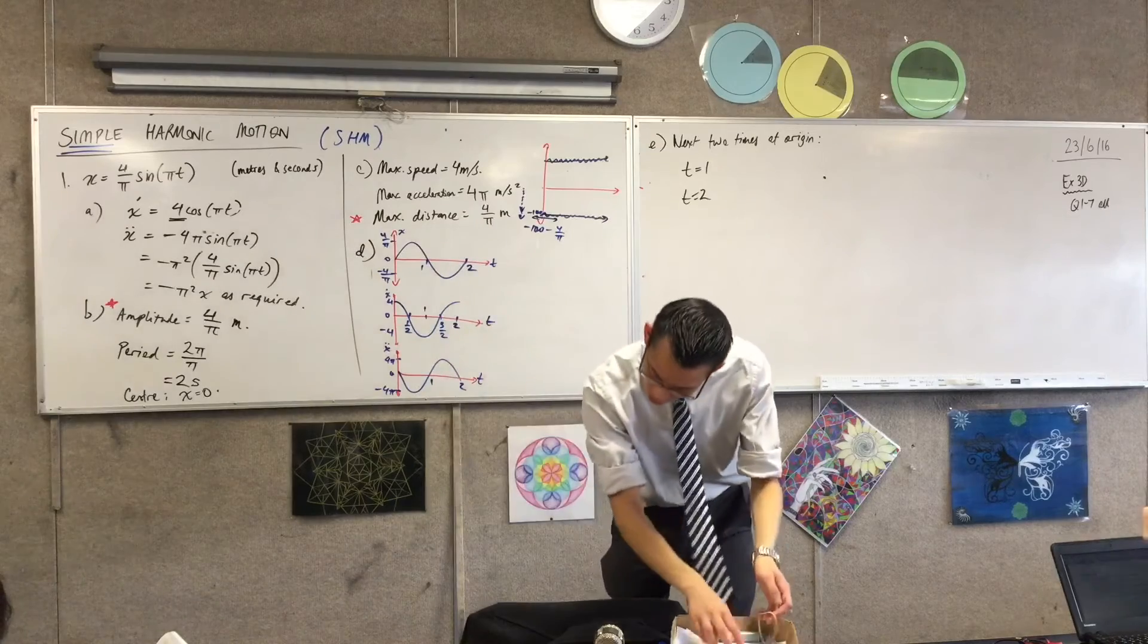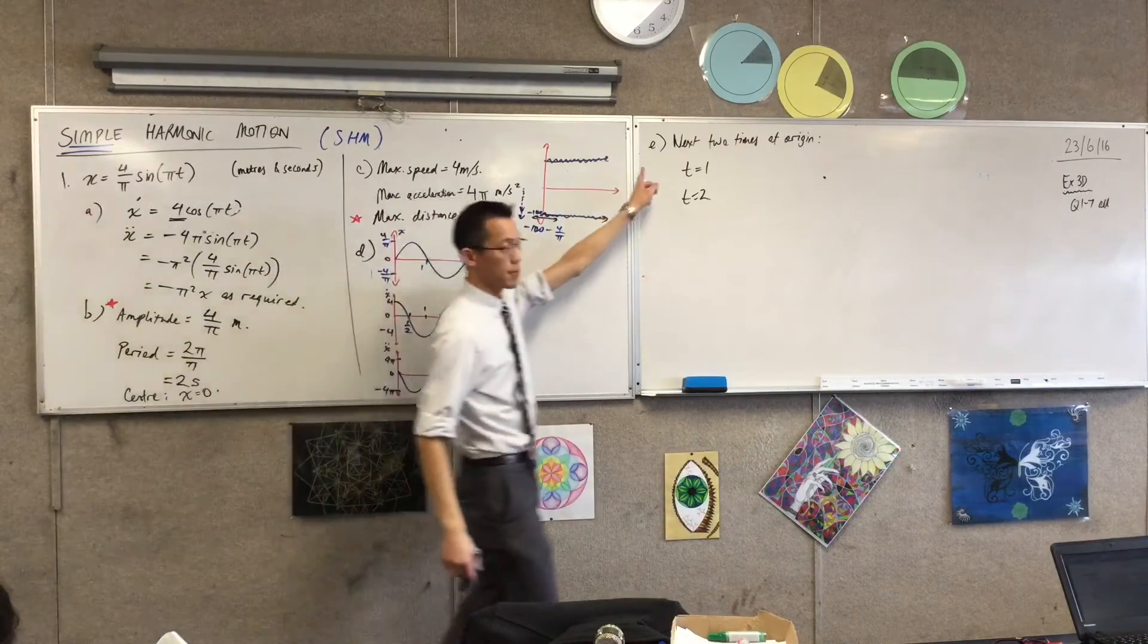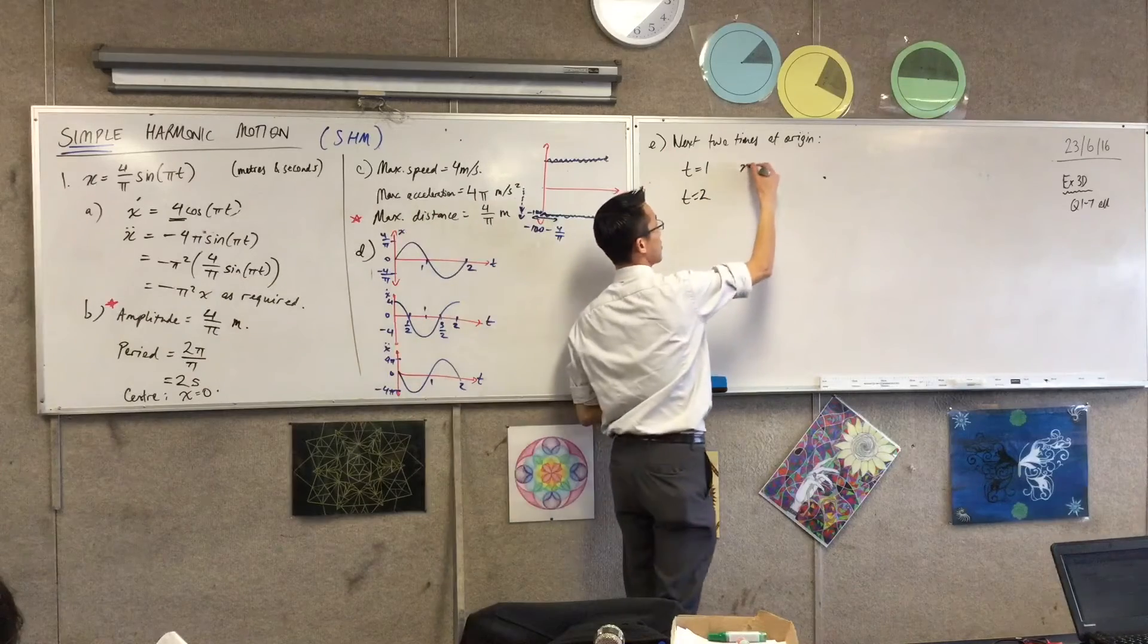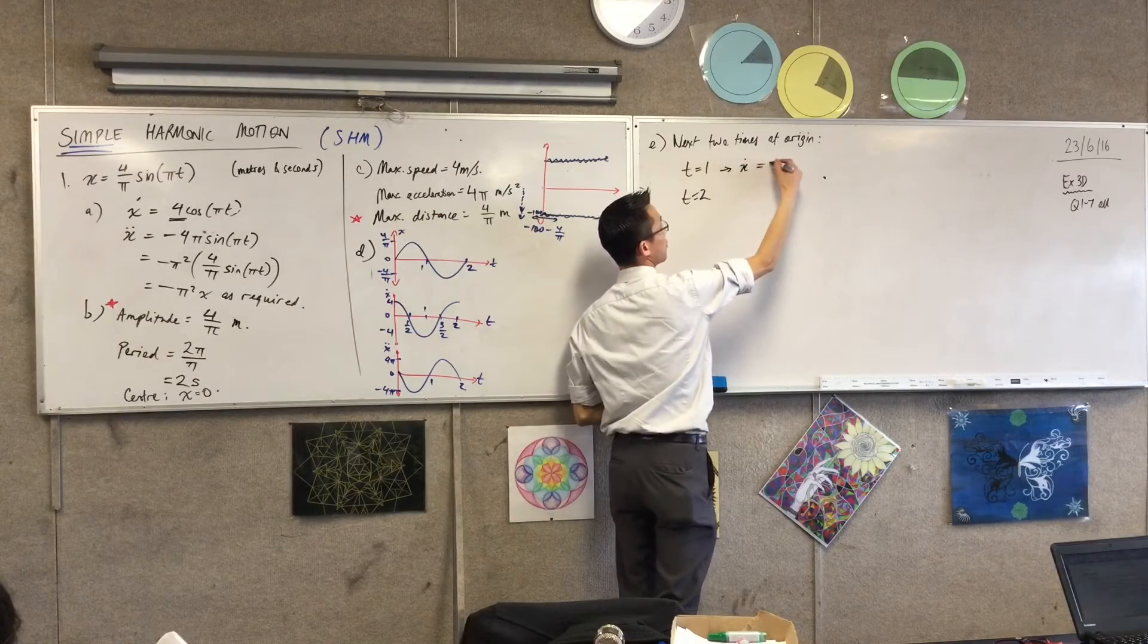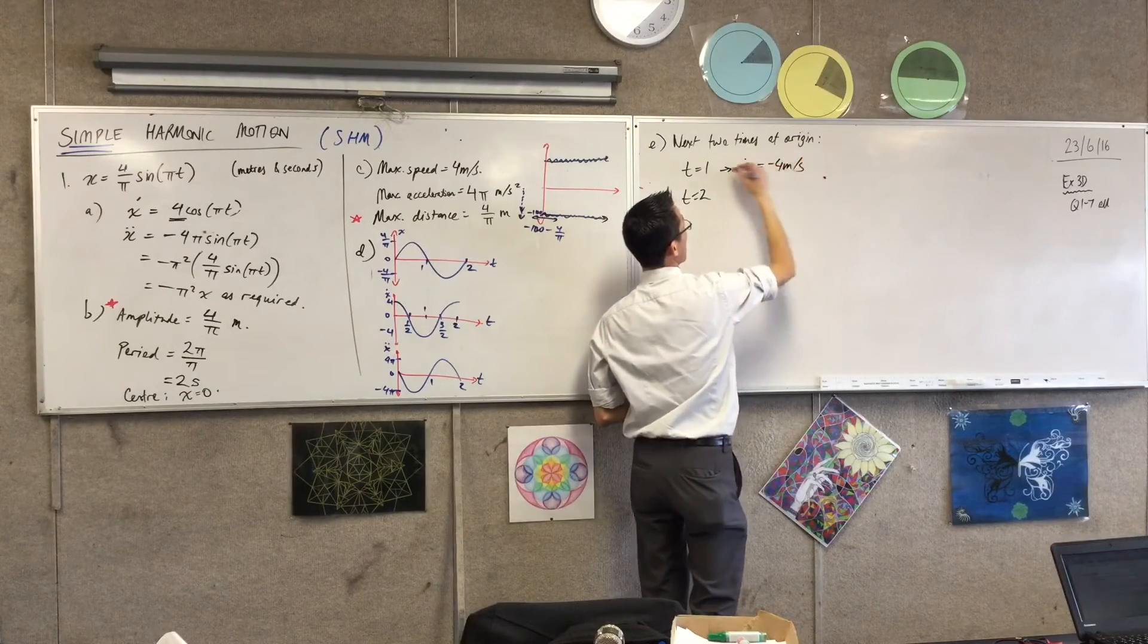So, they have asked for velocity, not speed, so my sign matters. When time is equal to one, what is the velocity? Minus four pi. Meters per second. And, yep, ready?